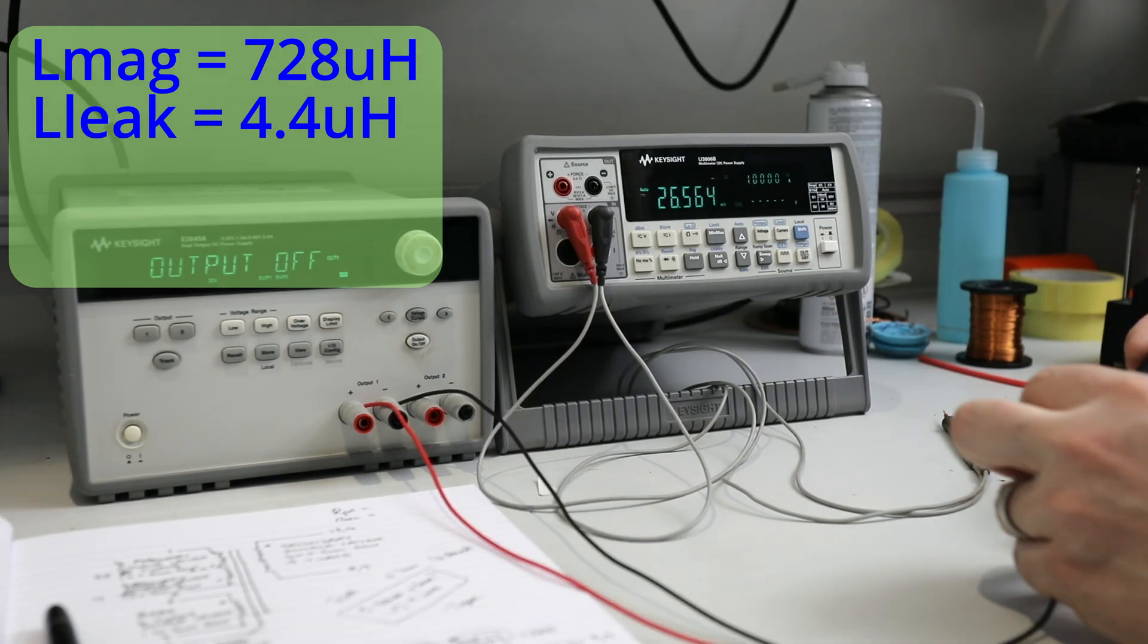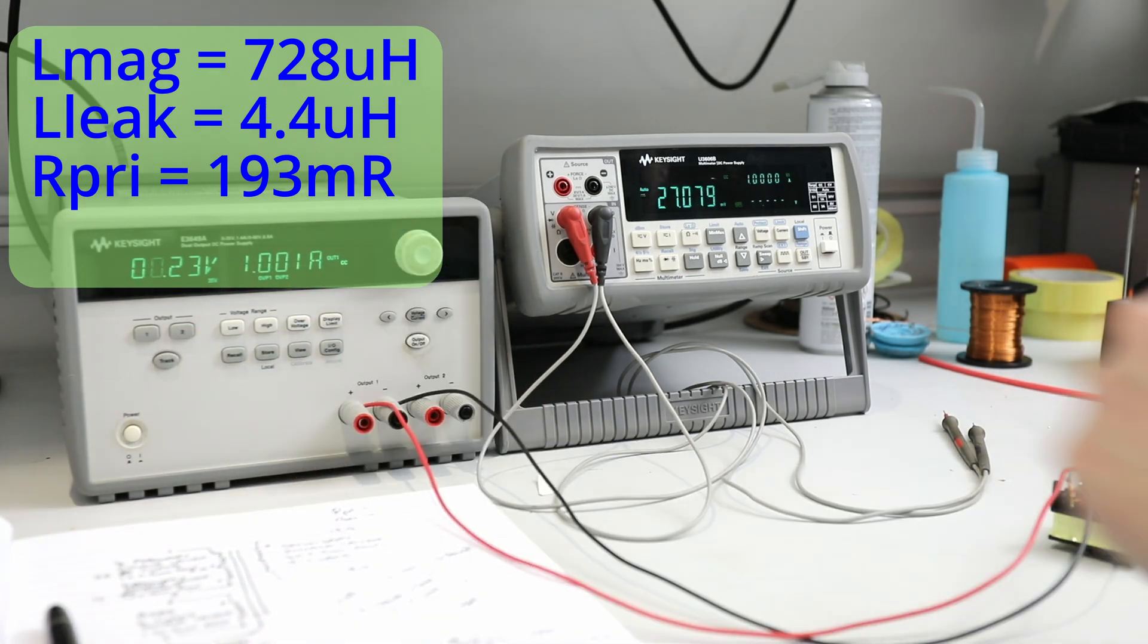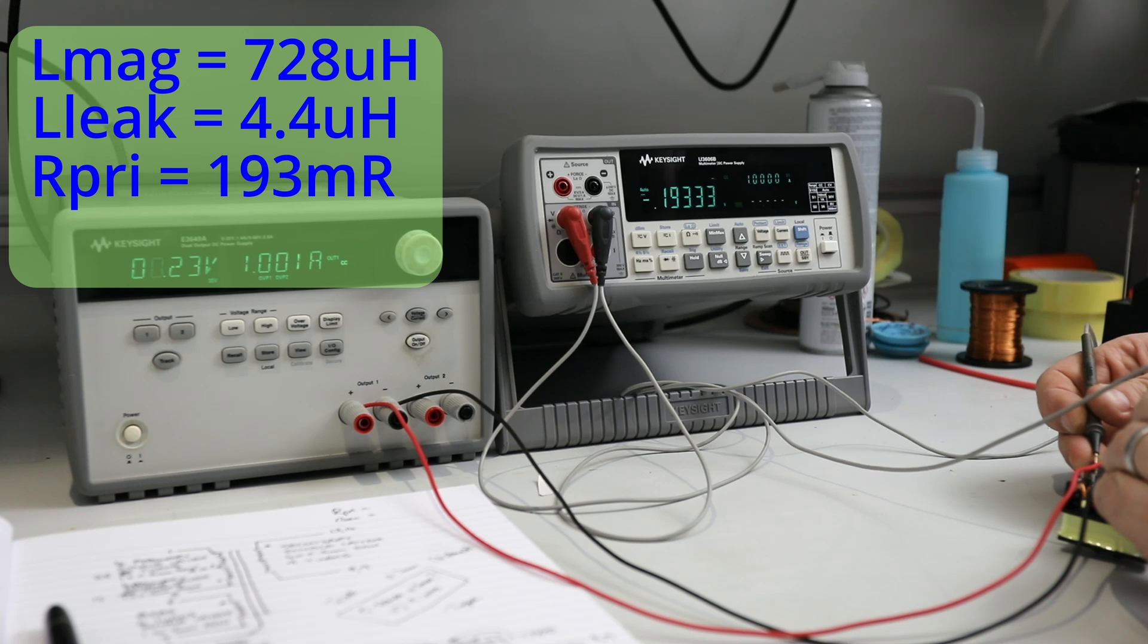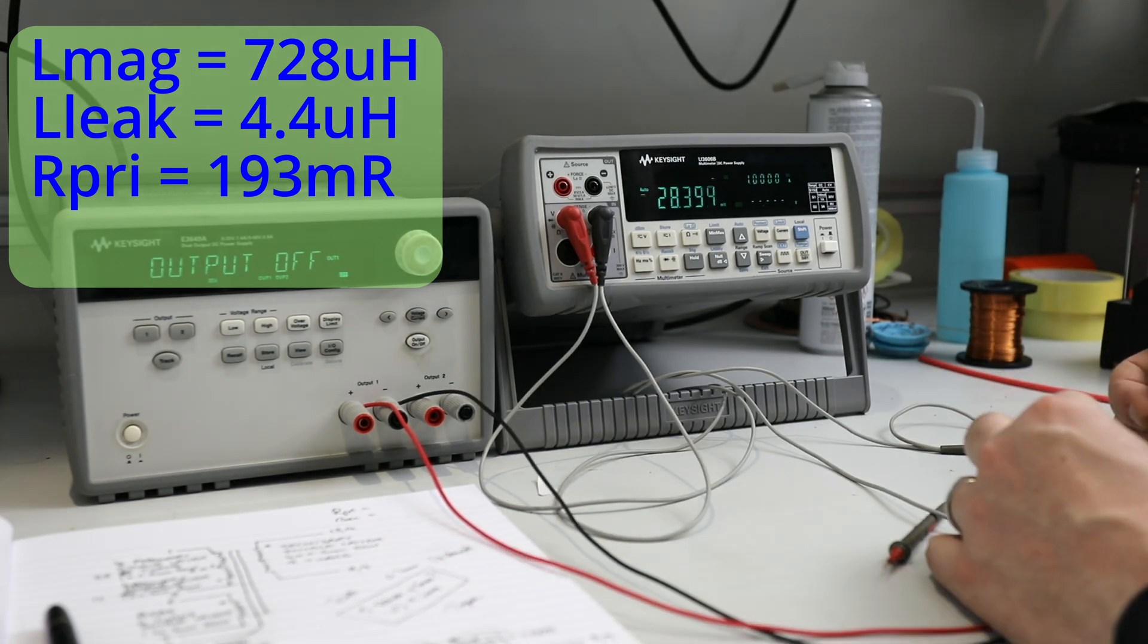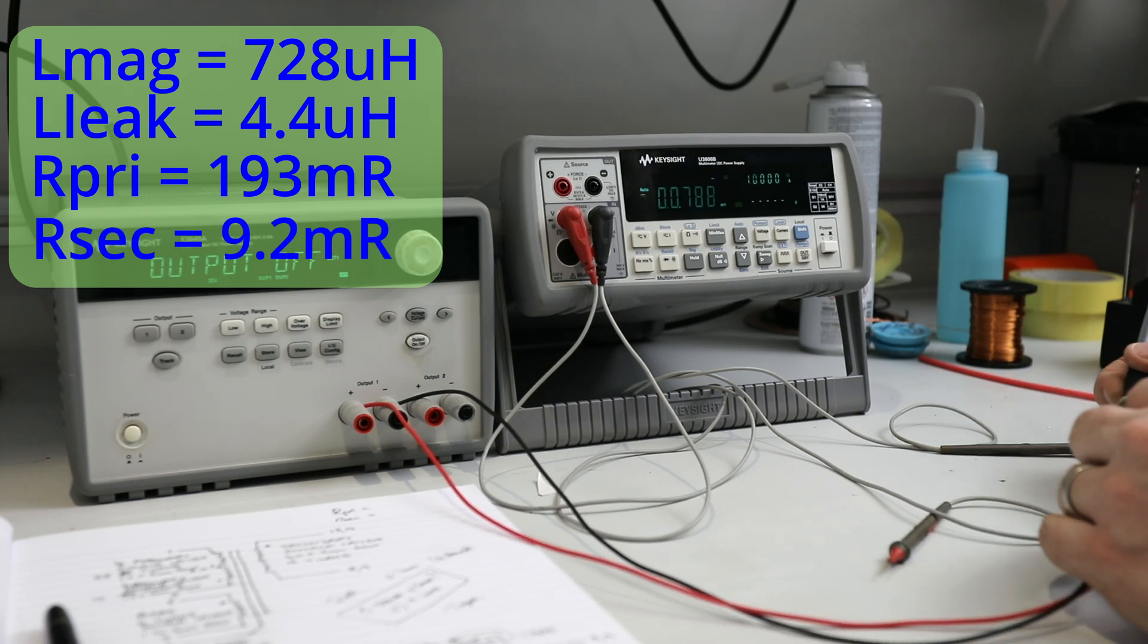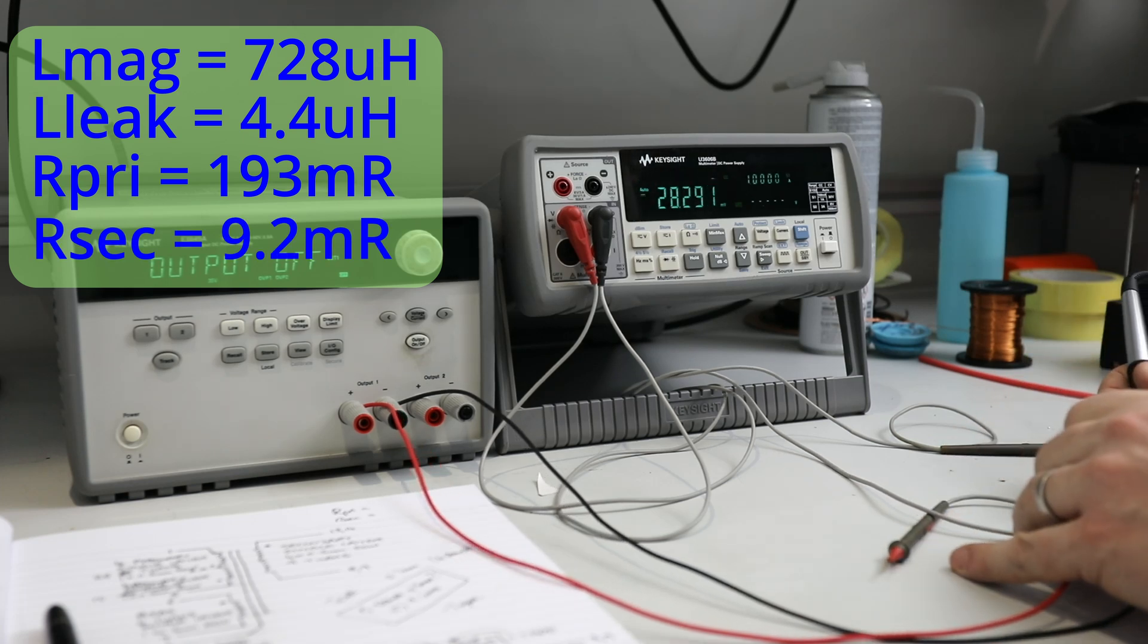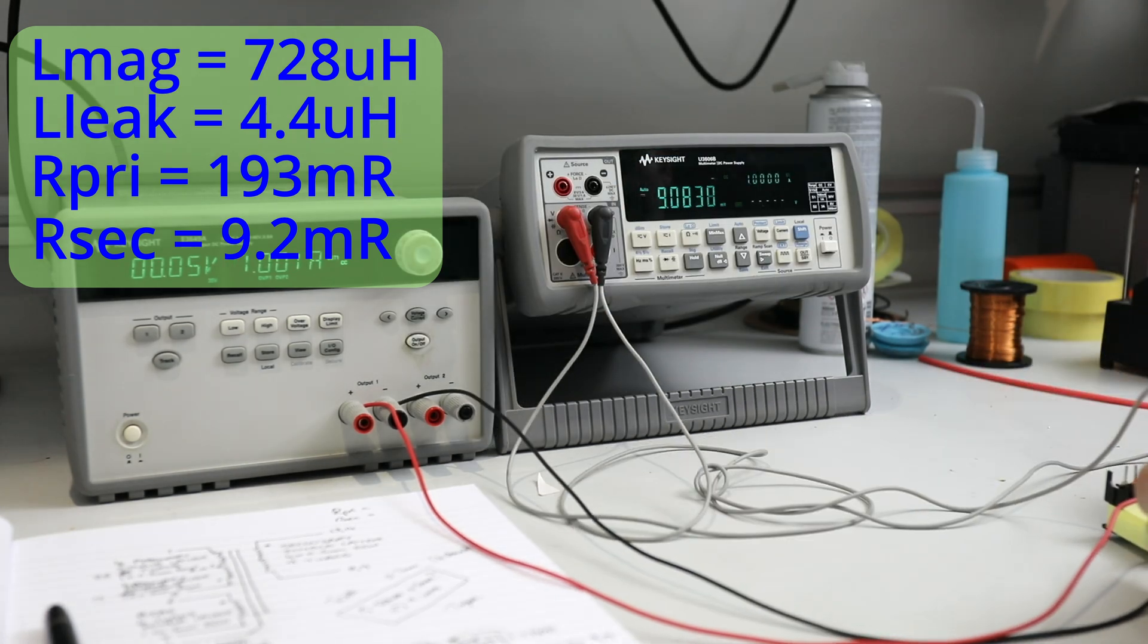Due to skin and proximity effects, the effective resistance of the windings at the normal operating frequency of 70 kilohertz will be much higher than the DC resistance of the windings. Whilst there are a number of ways to model this, I find a good starting point is to measure the DC resistance and then assume a certain multiplier when considering winding losses. The best thing is to test in practice and see how hot the part becomes.